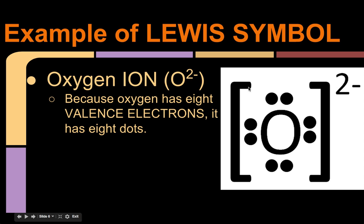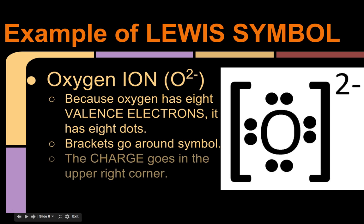And if you notice, I put brackets around the ion, because brackets go around that symbol, and then outside of that symbol is where the charge goes in the upper right-hand corner. So this is for anions, when it's a negative ion.